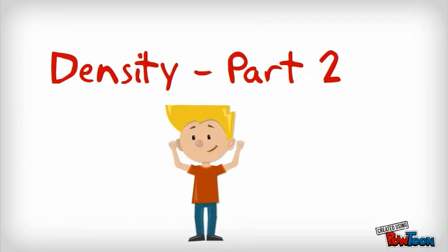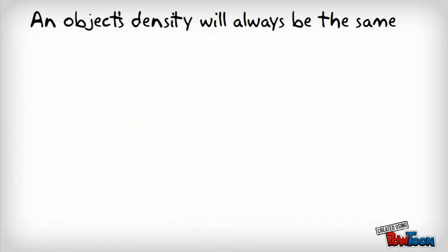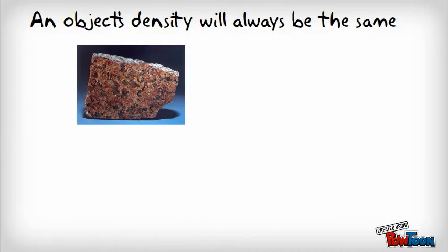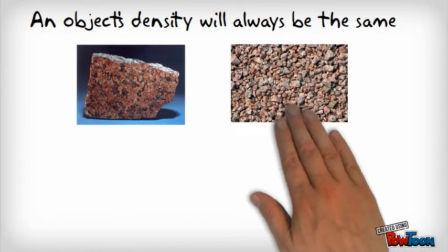Welcome to Density Part 2. Let's pick up where we left off. You've already seen that an object's density stays the same, even if you cut the object in half or chop it up into a million small pieces.